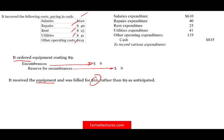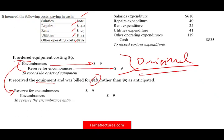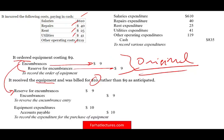The first thing you need to do when you receive the equipment is reverse the original encumbrance entry — the opposite: debit reserve for encumbrances, credit encumbrances, for exactly the same amount ($9 million as originally estimated). Then, since we received it and have to pay, we record equipment expenditure of $10 million and credit accounts payable $10 million. This is to record the expenditure for the purchase.